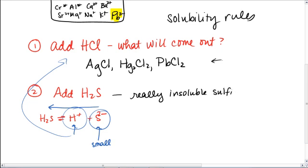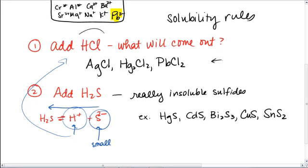So, what's going to precipitate out when that happens is that's going to cause the really insoluble sulfides to precipitate out, those that have really, really small KSP values. And so, those are going to be ones like HgS, cadmium sulfide, bismuth sulfide, copper-2 sulfide, and tin sulfide. Those are the ones that will precipitate out when you've added HCl first and then H2S after.